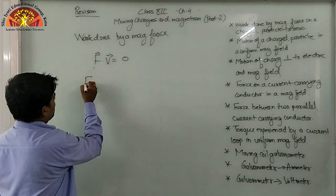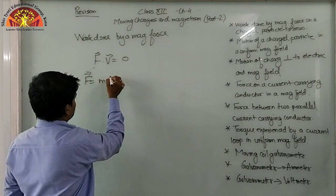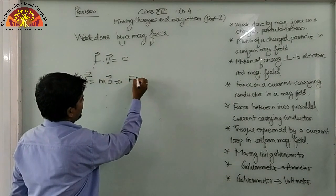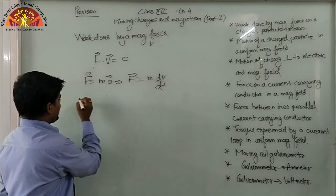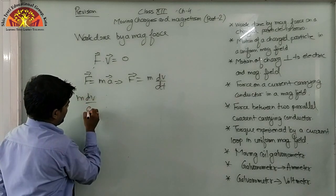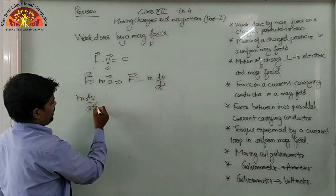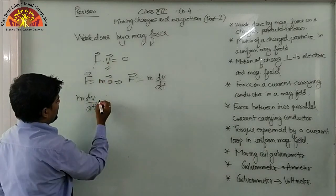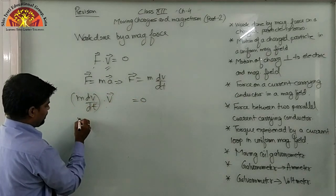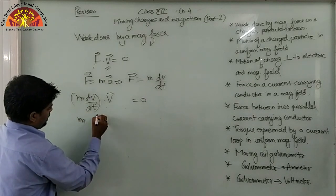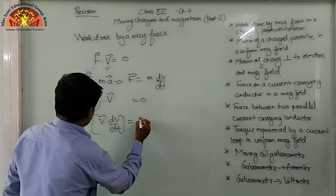We already know the formula of F according to Newton's second law of motion: F equals m into a. Now put the value as F equals m dV upon dt. Now take m dV upon dt — we have to keep this in mind. Now, if we multiply this whole expression by V, it gives zero. Solving, we take m common and get V dV upon dt equals 0.